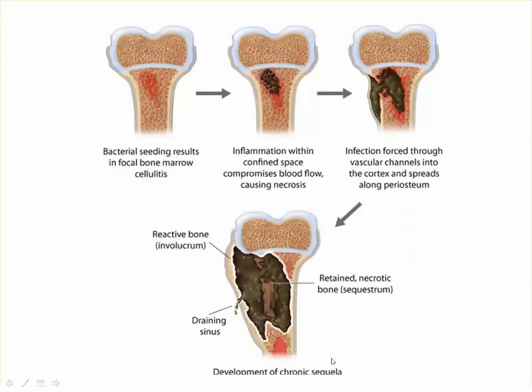In chronic untreated cases you may see sequestrum, involucrum, and cloaca. The bacteria seeding into the bone results in focal bone marrow cellulitis; inflammation compromises blood flow causing necrosis. Infection is forced through the vascular channel into the cortex via the nutrient artery, then retrograde into the sub-periosteal area, leading to periosteal elevation and sub-periosteal new bone formation. The central part of the bone becomes necrotic — this is the sequestrum — while the periosteum deposits new bone, forming the involucrum.